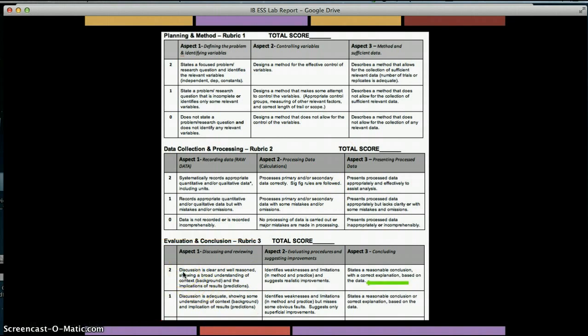Let's talk about method. Well, method is a huge part of the IB lab in ESS. So the entire first section, planning a method, is for the method. And where it says zero, don't focus on that. One and two is where you want to aim. You want to be up here. Okay? So first you want to focus problem or question that identifies all the variables. That's where your table comes in handy.